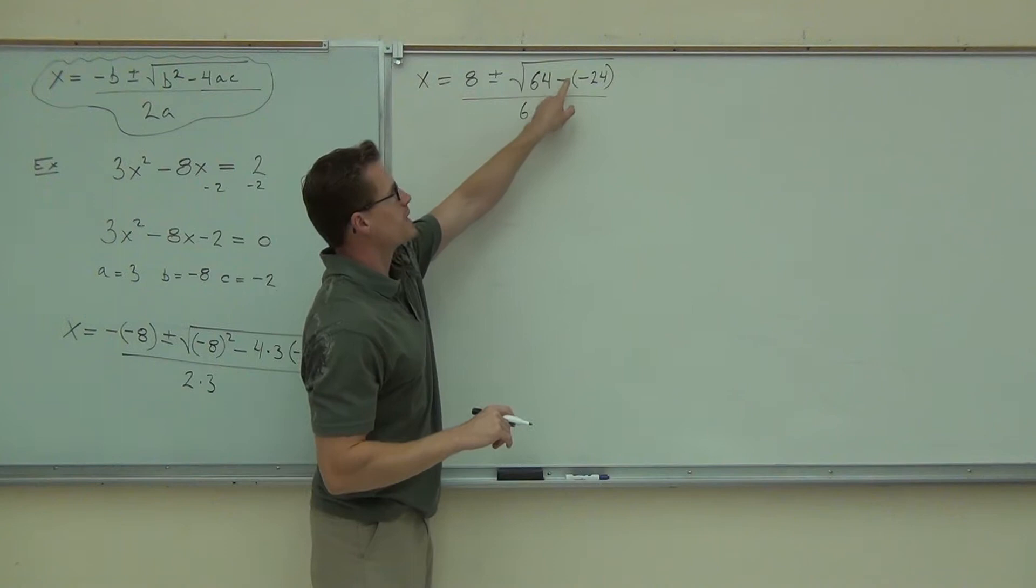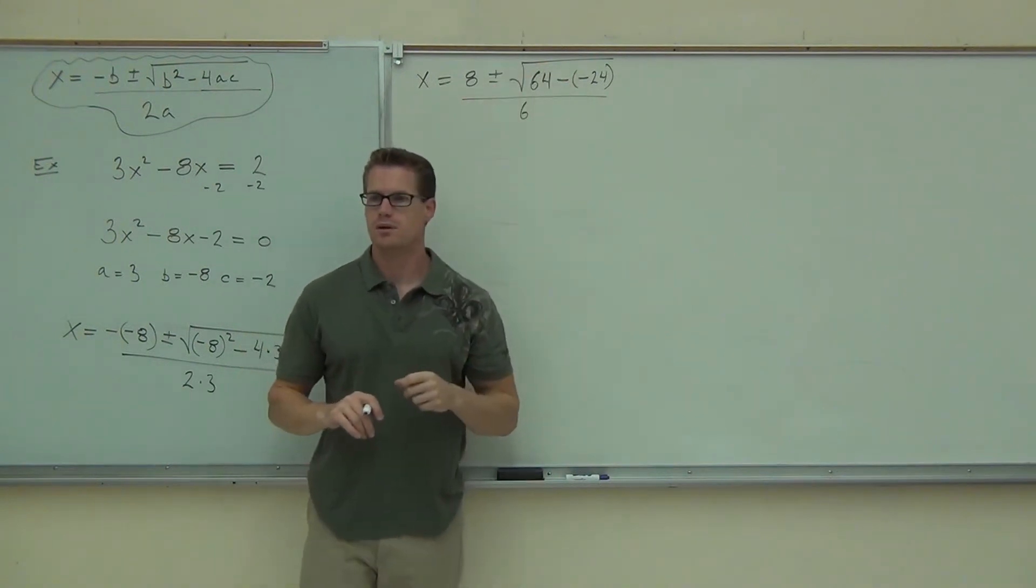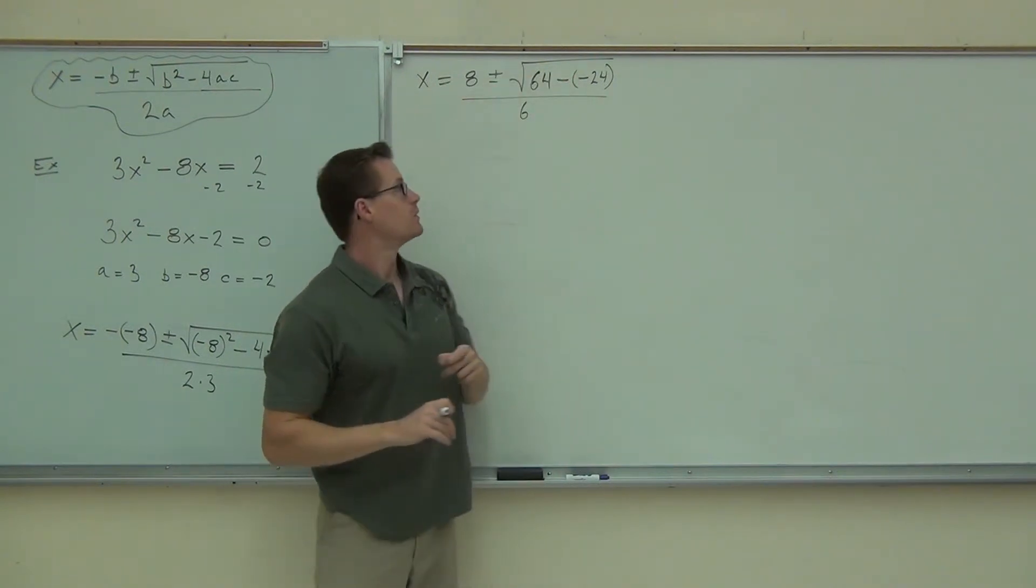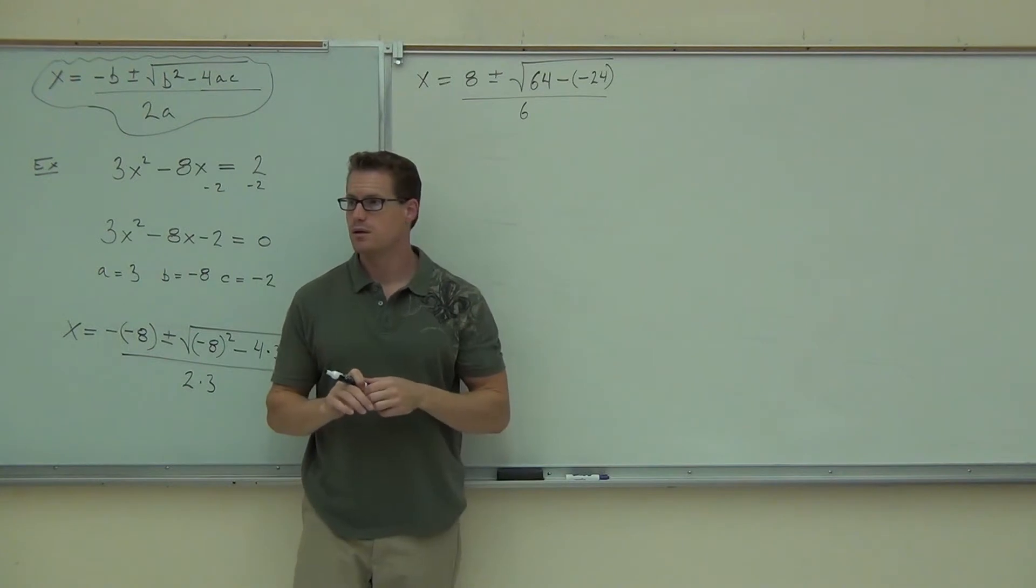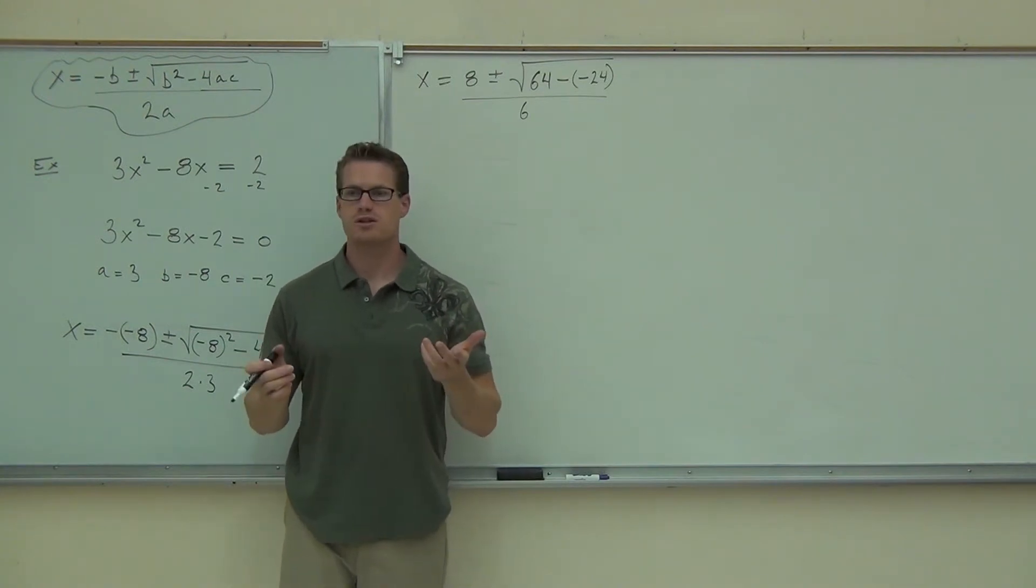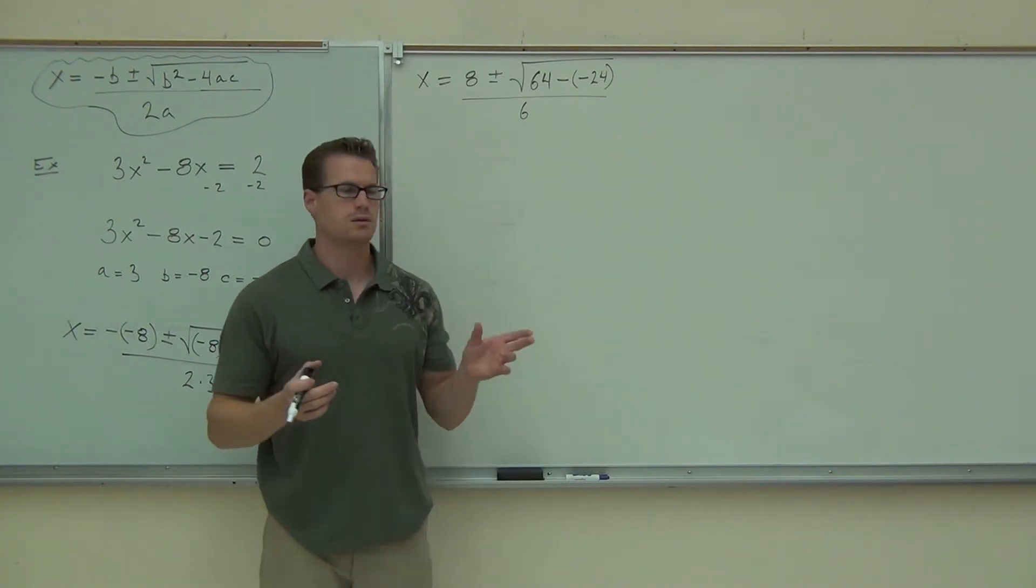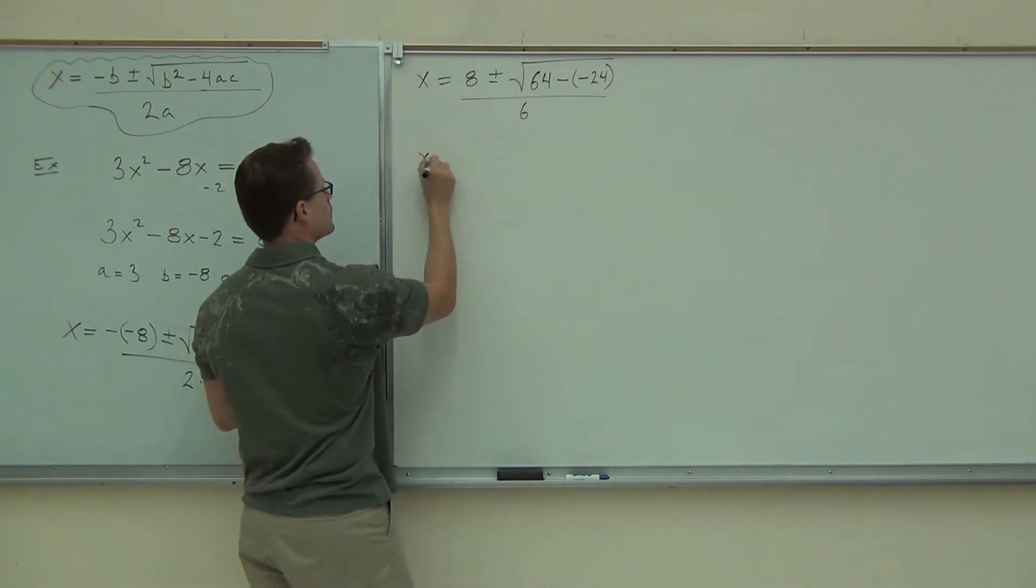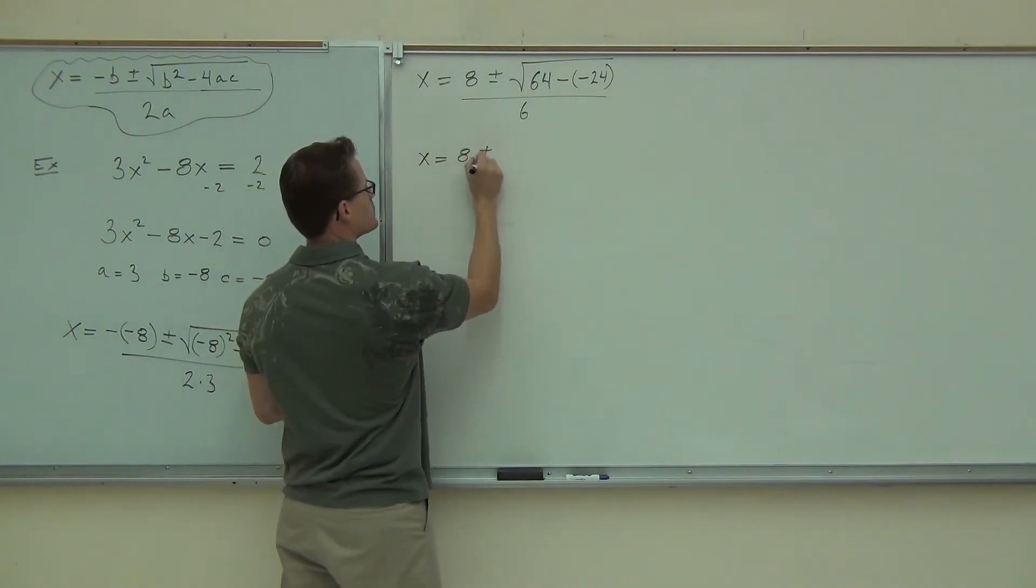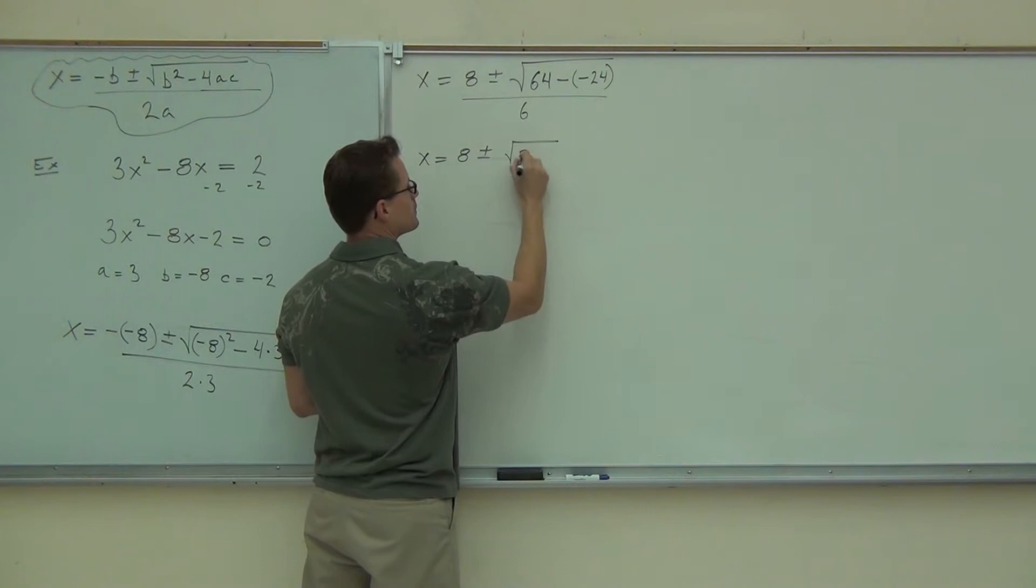How much is 64 minus negative 24? 88. We're not going to get 40? No. Are we subtracting or actually adding? We're adding. Plus or minus, you said 88? Yeah. Over 6.